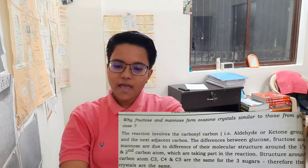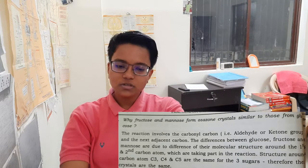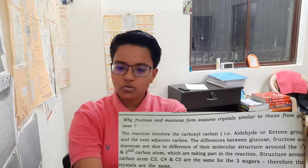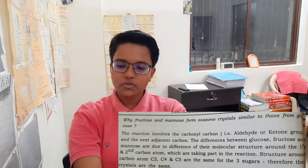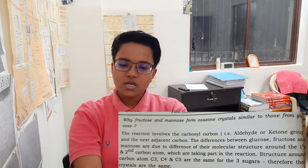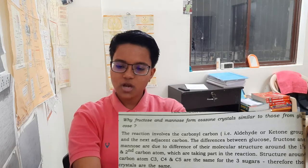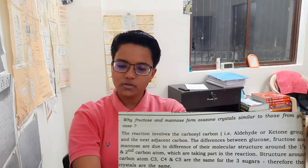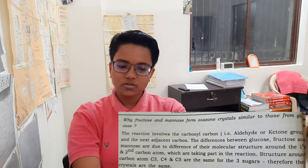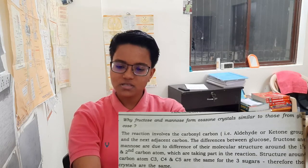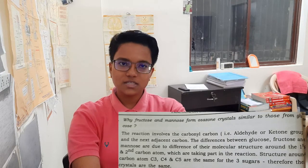Why do fructose and mannose form osazone crystals similar to those from glucose? The reaction involves the carbonyl carbon — the aldehyde or ketone group — and the next adjacent carbon. The differences between glucose, fructose, and mannose are due to differences in their molecular structure at the first and second carbon atoms, which take part in the reaction. The structure around carbon atoms C3, C4, and C5 are the same for all three sugars. Therefore, their crystals are the same.